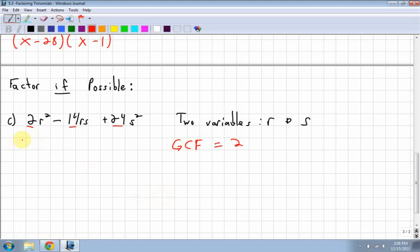Next thing I do is I factor. I take the 2 out. And remember, when I'm factoring out, I divide each term. So I divide by 2. 2's are gone. I'm left with just my r squared. Minus. I divide by 2. I'm left with 7rs. Next one, I divide by 2. I'm left with 12. And it's a plus. 12s squared.